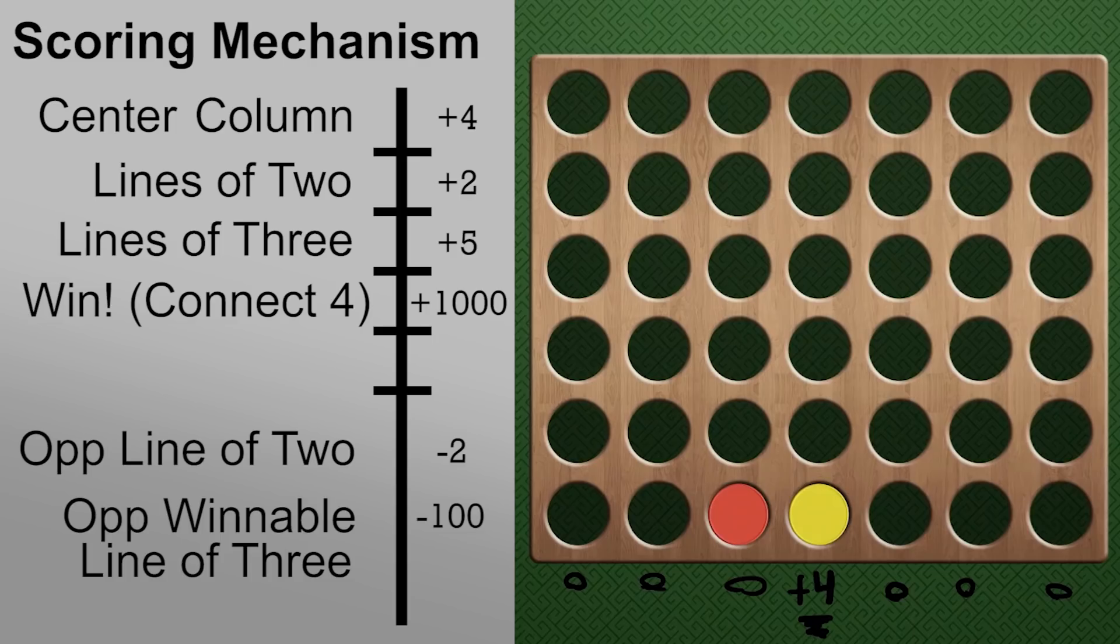So once the opponent drops their piece, now we have to re-evaluate the board. So once again, well, let's start with the center. So the center, if we dropped it right here.